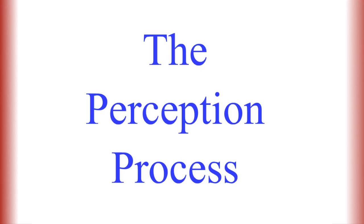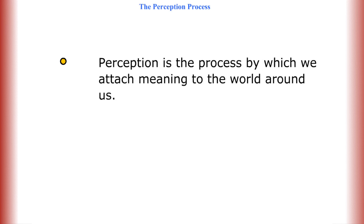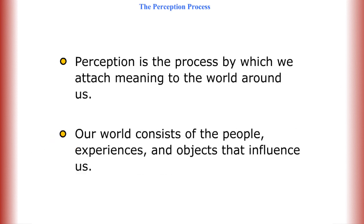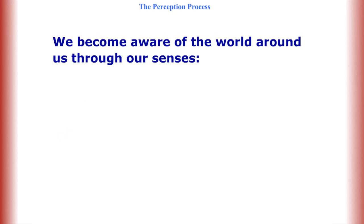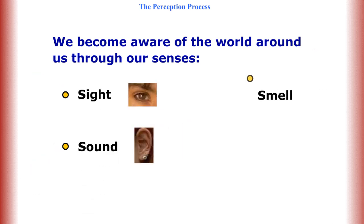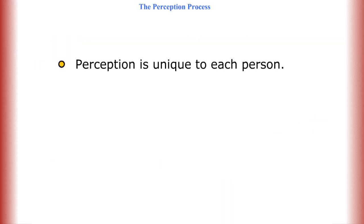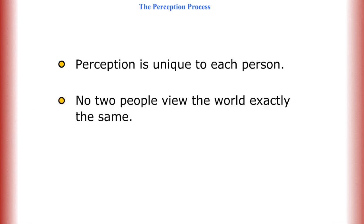Perception is the process by which we attach meaning to the world around us. Our world consists of the people, experiences, and objects that influence us. We become aware of the world around us through our senses: sight, sound, smell, taste, and touch.